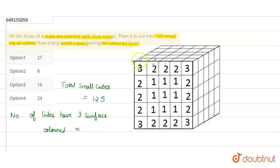And these 3 surfaces are colored. So the corner cubes are colored. How many? 1, 2, 3, 4. In the same way, there will be 5, 6, 7, and 8. There are 8 cubes that have 3 surfaces colored.